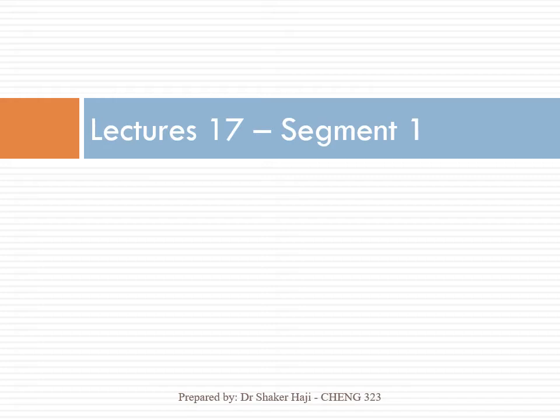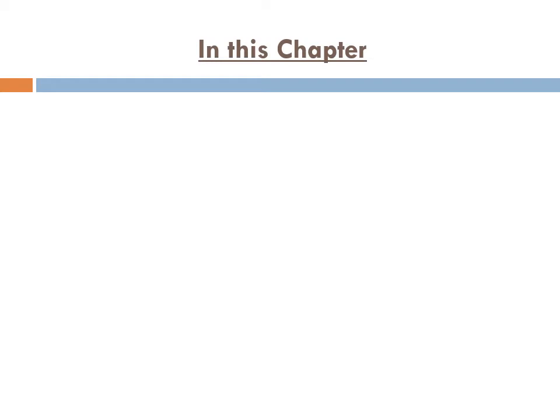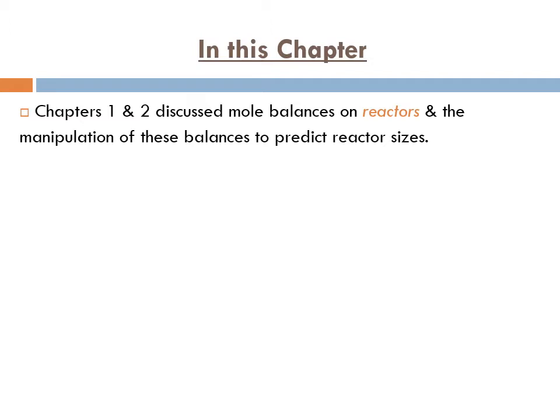I divided this lecture into three segments just for simplicity. In this chapter, chapters 1 and 2 discussed mole balances on reactors and the manipulation of these balances to predict reactor sizes, meaning that we have developed the design equations starting from mole balances.